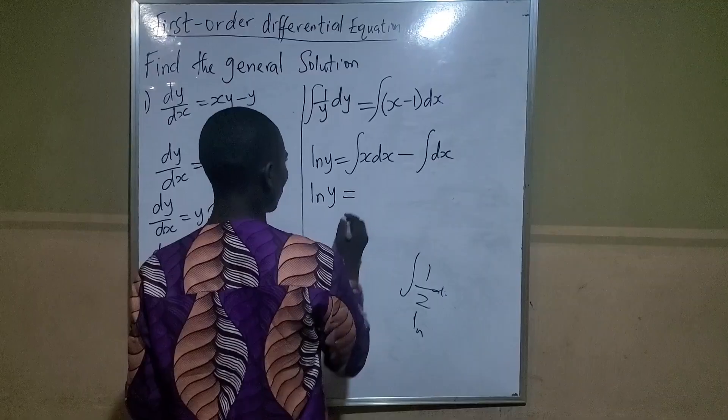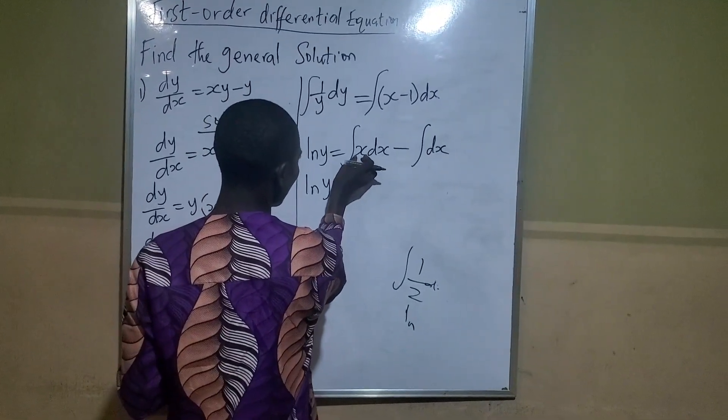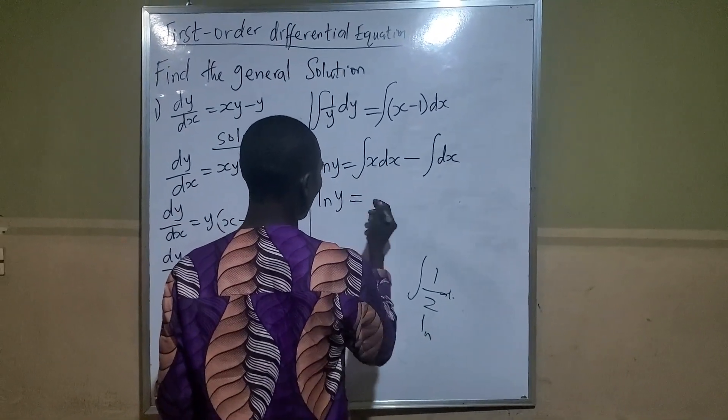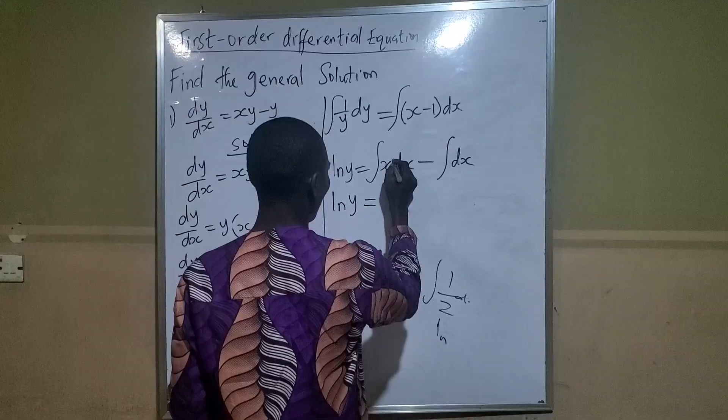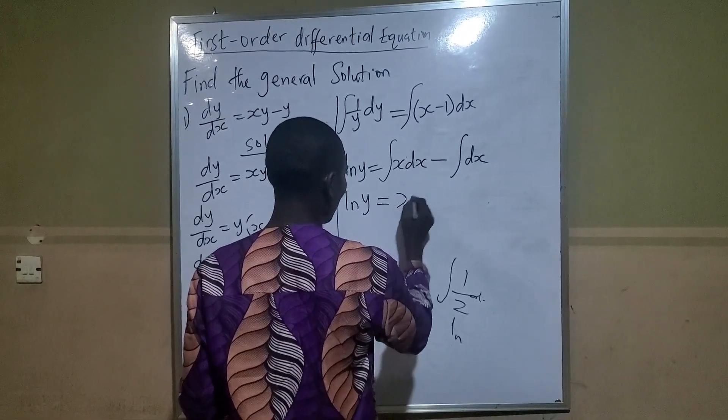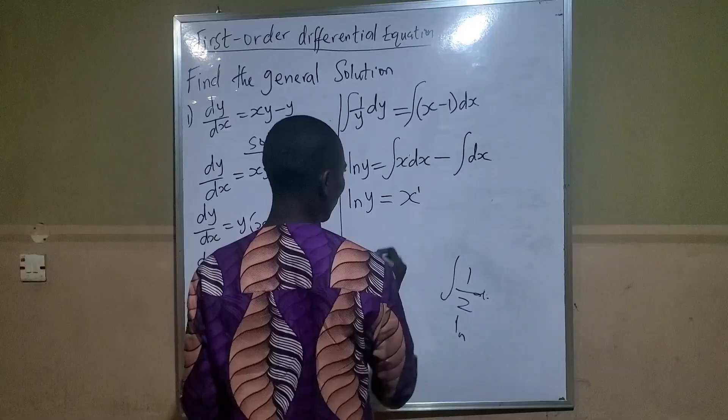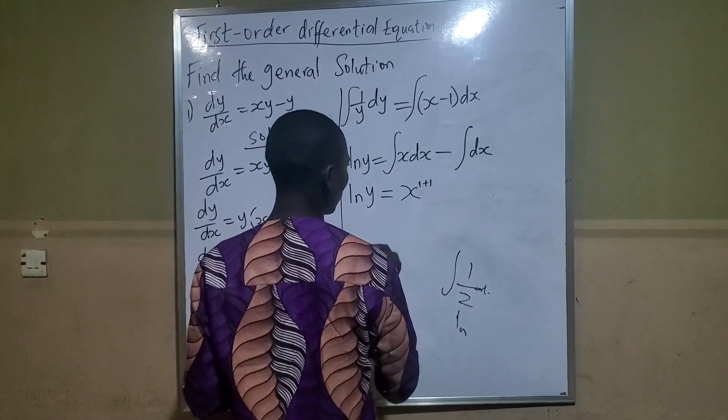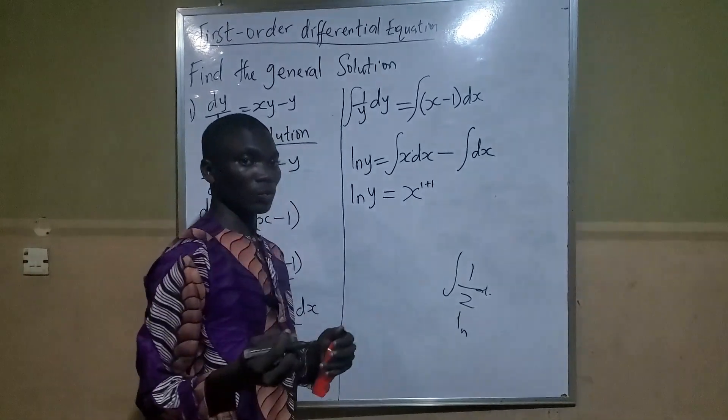I'm integrating x with respect to dx. What will I do? I will add 1 to the power of x. The original power of x is 1, so I will add 1 to it. In differentiation you subtract 1, but in integration you add 1.